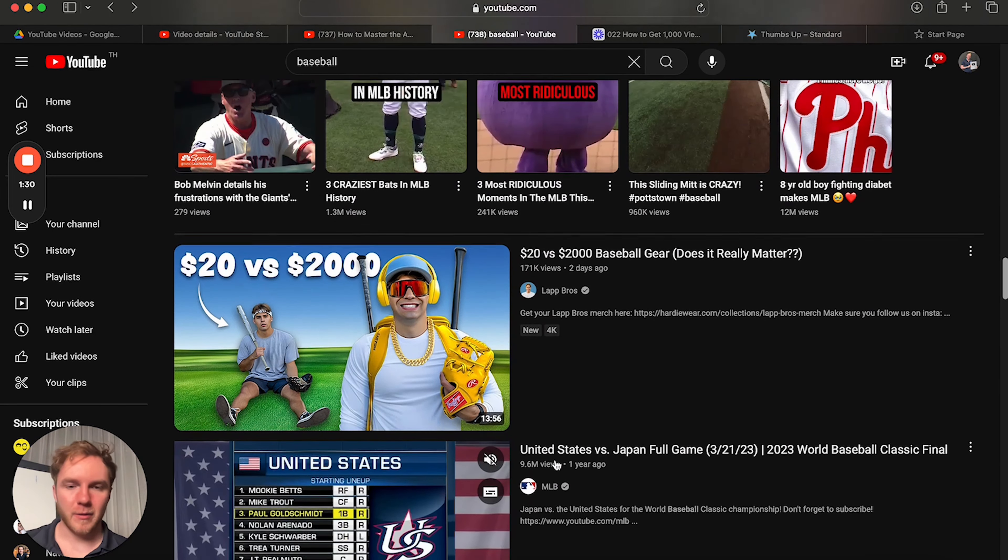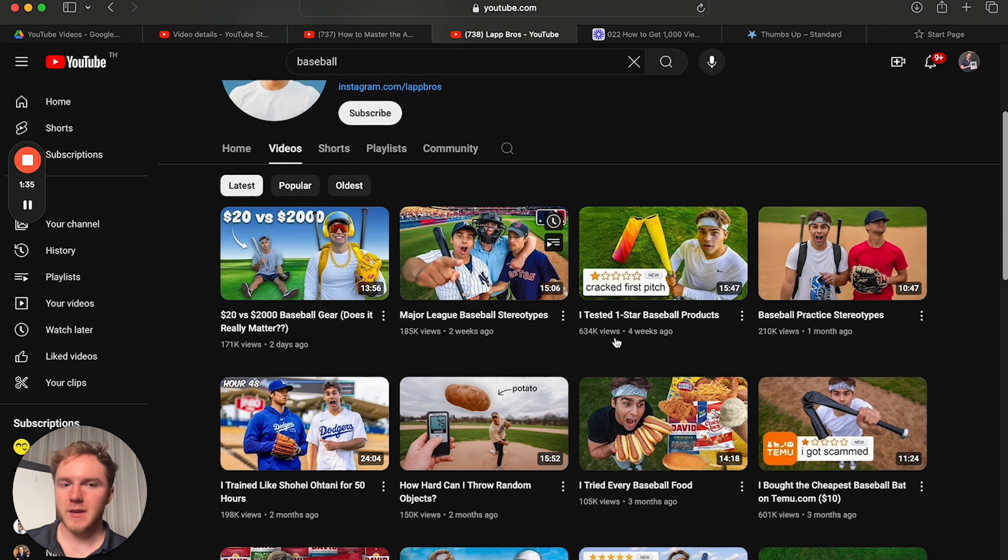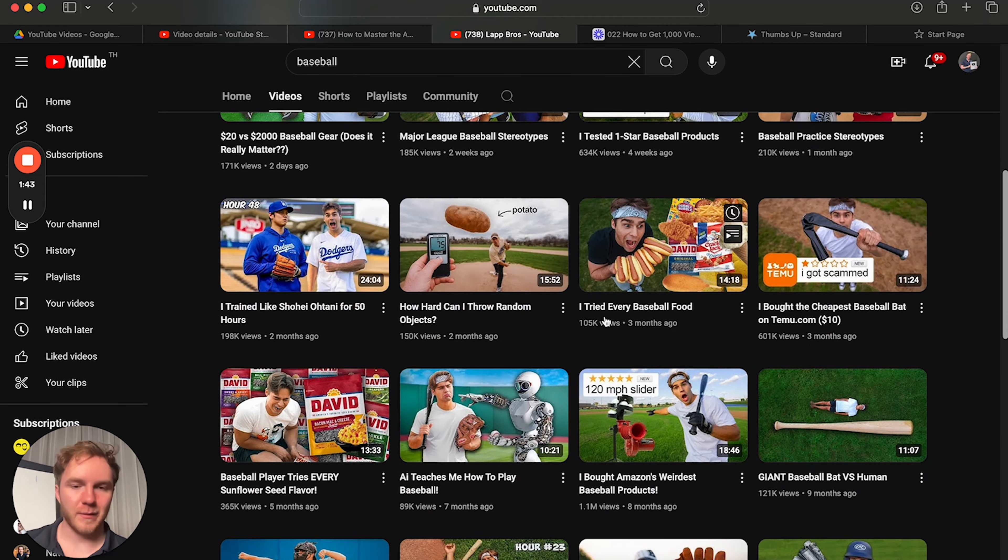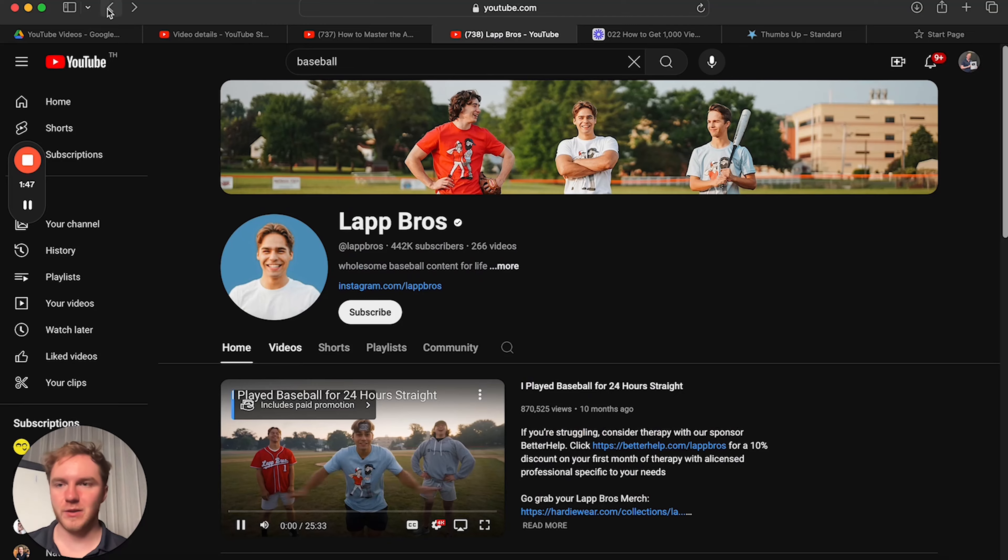So if you wanted to make a baseball channel, that's a pretty good sign that someone is already getting views on it. Obviously you have the MLB, but we don't want to look at them because we can't really replicate them. Lap bros, check them out. Again, all baseball. They're getting 600,000 views, 210,000 views, 150,000 views. I tried every baseball food, 100,000 views. So there's clearly a potential to get views in this niche.